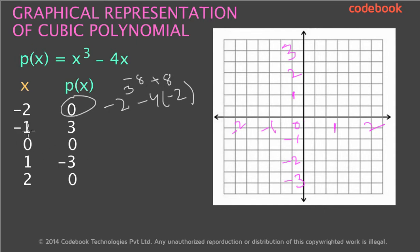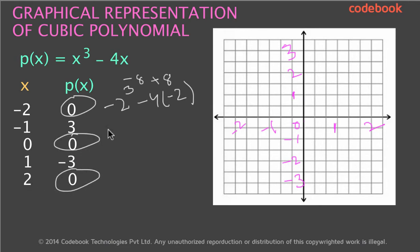Similarly, when x is minus 1, the value of p of x is 3. When x is 0, it is 0. When x is 1, it is minus 3. And when x is 2, it is 0 again. So there are three zeros as you see here.